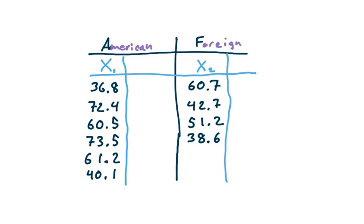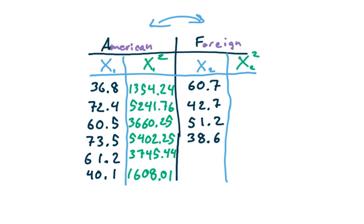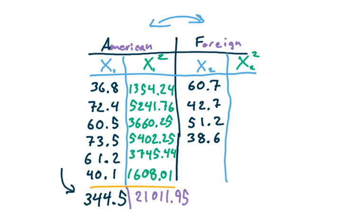Remember, we're not going to let these values interact with one another because they are not dependent on one another. What we're going to do instead is create a little column for X₁ squared and X₂ squared — we're going to calculate the squares of all of these. So we've got all of those X values and all of those X squared values, and then we're going to add all of those up. That gives us the summation of the X values: 344.5, which is the sum of all the X values, and then the summation of the X values after we squared them.